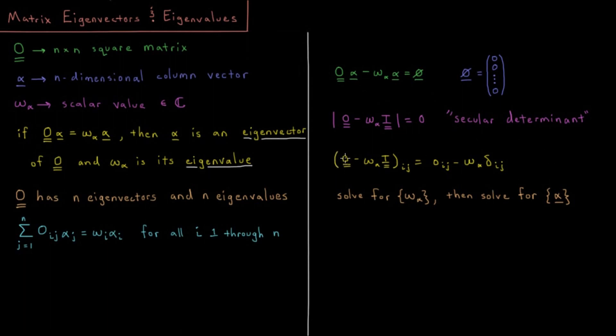O minus omega I: all of the elements of this are just the elements of O, unless you're along the diagonal where you're subtracting the eigenvalue. The Kronecker delta is one when i and j are equal (the diagonal) and zero when they're not equal.